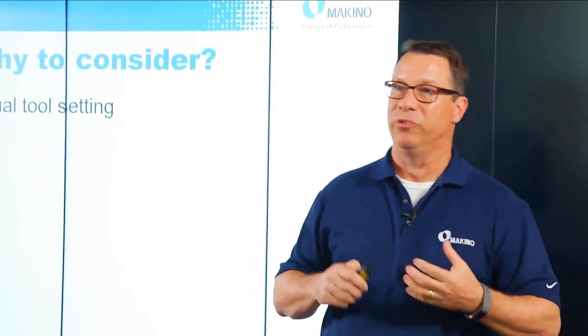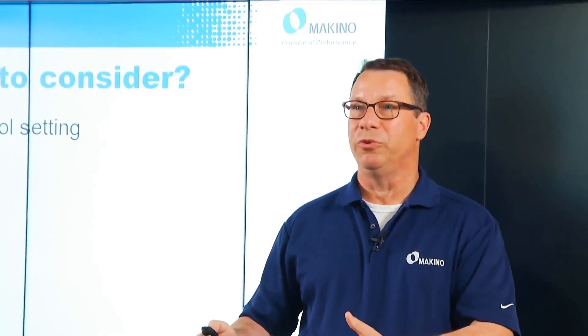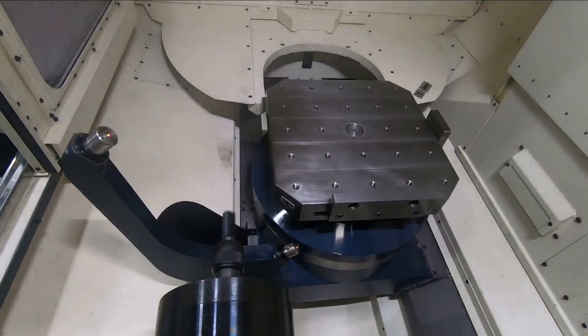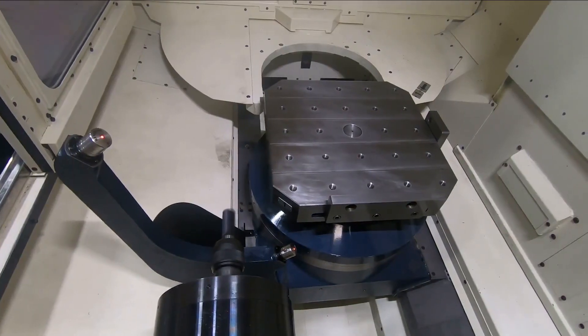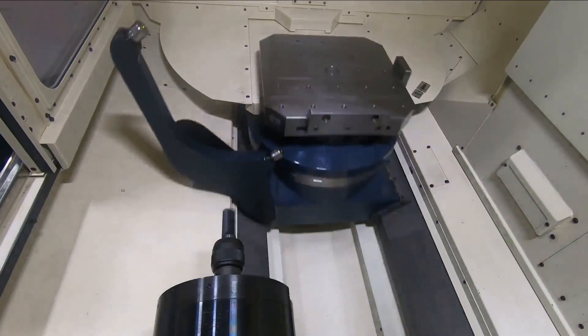So let's start out with why to consider. Why would somebody want to do in-machine tool measurement? First and foremost, the potential exists to eliminate manual tool setting — basically allow your machine tool to do a little bit more work for you. Bring that tool into the machine; it's already going to be assembled into the holder, clamped in the spindle, representative of exactly how that tool is going to see the workpiece, and eliminate doing that offline and also eliminate a bit of variability that goes with checking it offline versus checking it clamped up in the machining center.